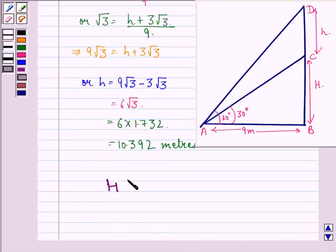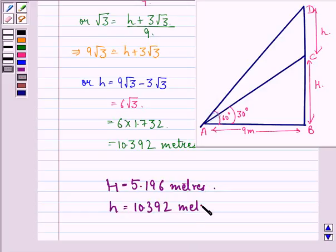So our answer to this question is that the height of the tower (capital H) is equal to 5.196 meters and the flag mounted on it (small h) is equal to 10.392 meters. I hope that you understood the solution and enjoyed the session. Have a good day.